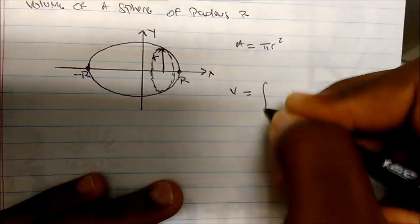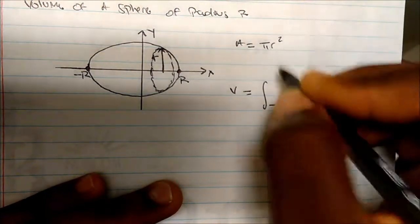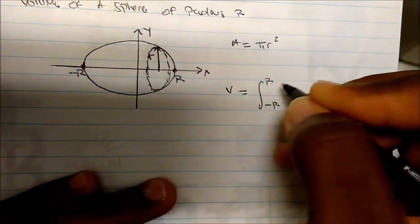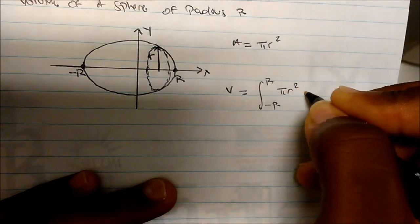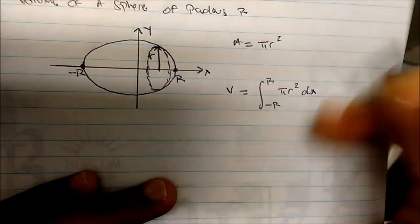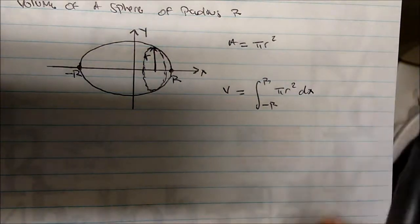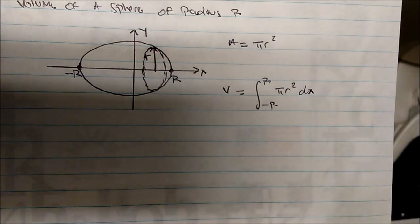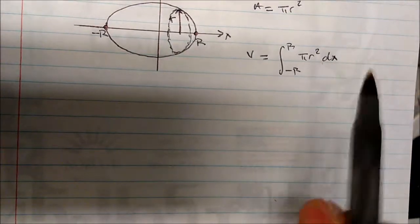So if we integrate from negative r to r of π r squared dx, we'll actually find the volume. But what is our r? That's what we've got to find out.